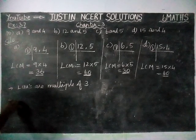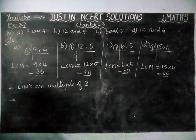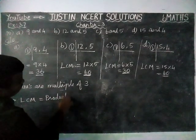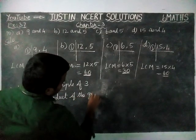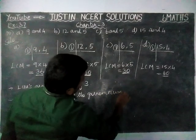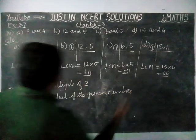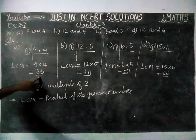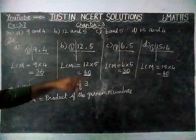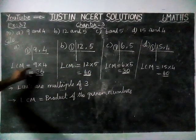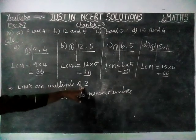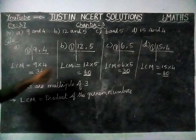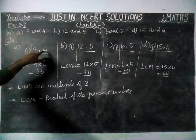The second property is: LCM is equal to the product of the given numbers. For 9 and 4, since they don't have any common divisor other than 1, we multiply them: 9 × 4 = 36. Similarly, 12 × 5 = 60, 6 × 5 = 30, and 15 × 4 = 60. All LCMs are multiples of 3 — that is the common property. And when we multiply the given numbers, we get the LCM.